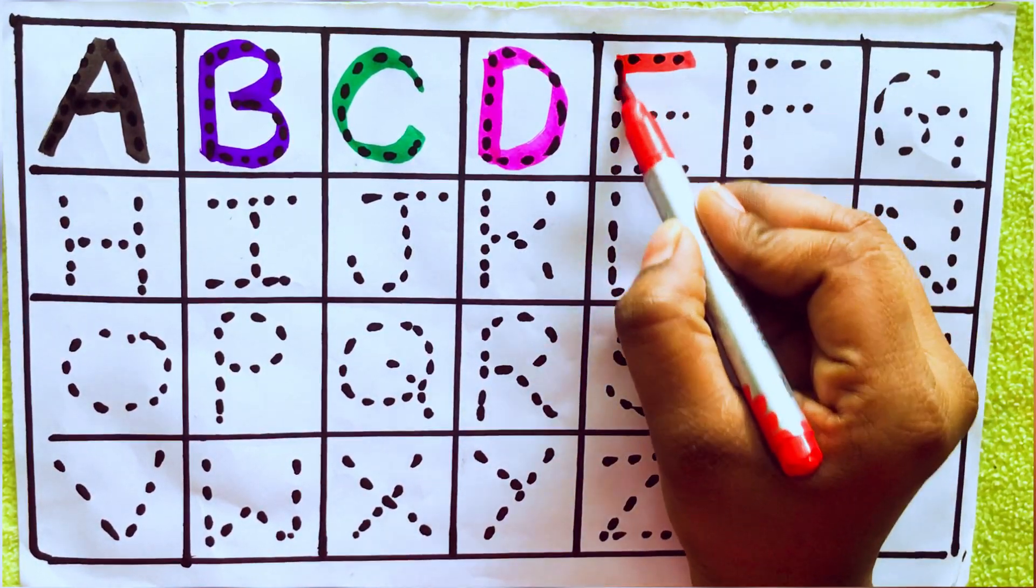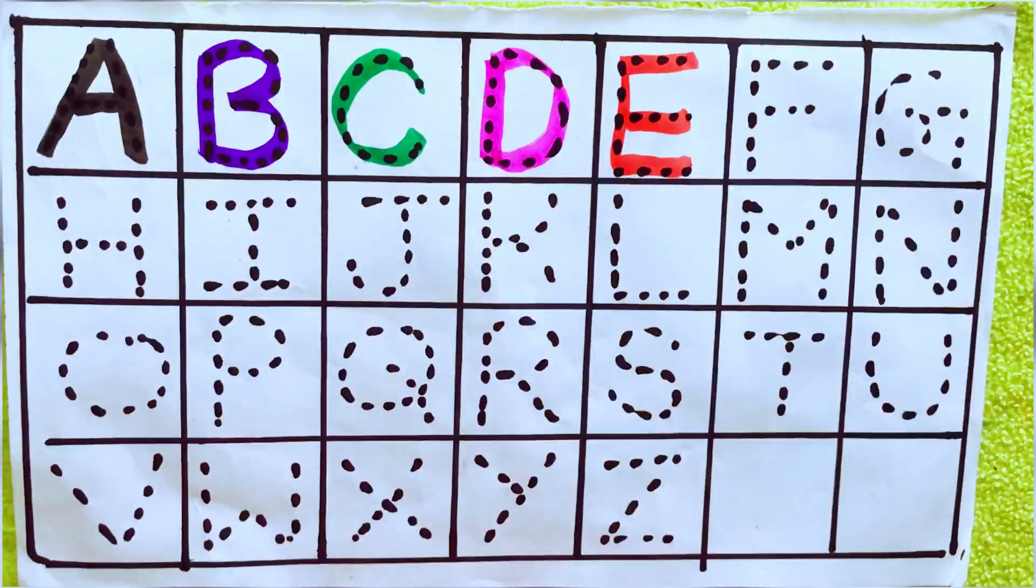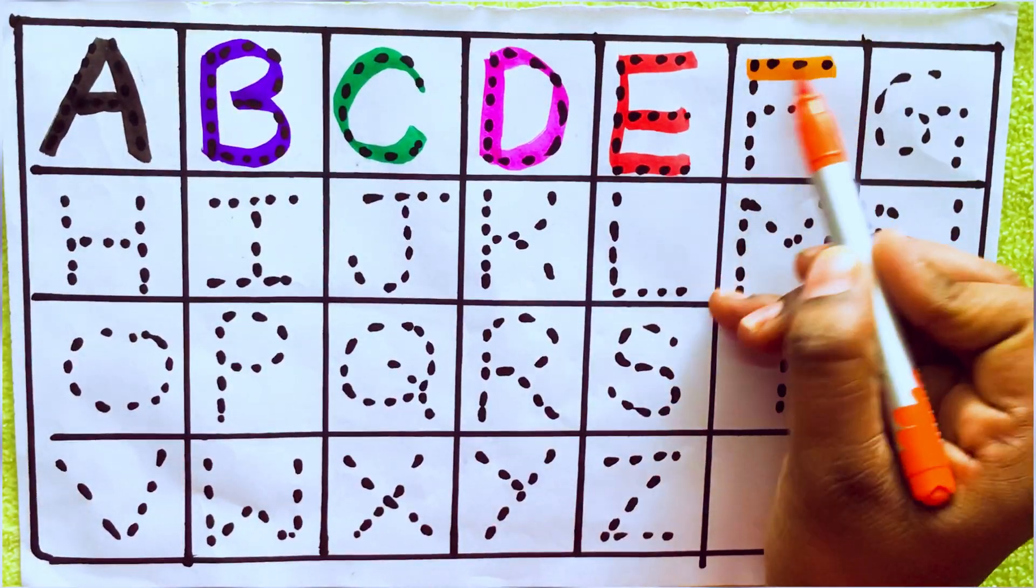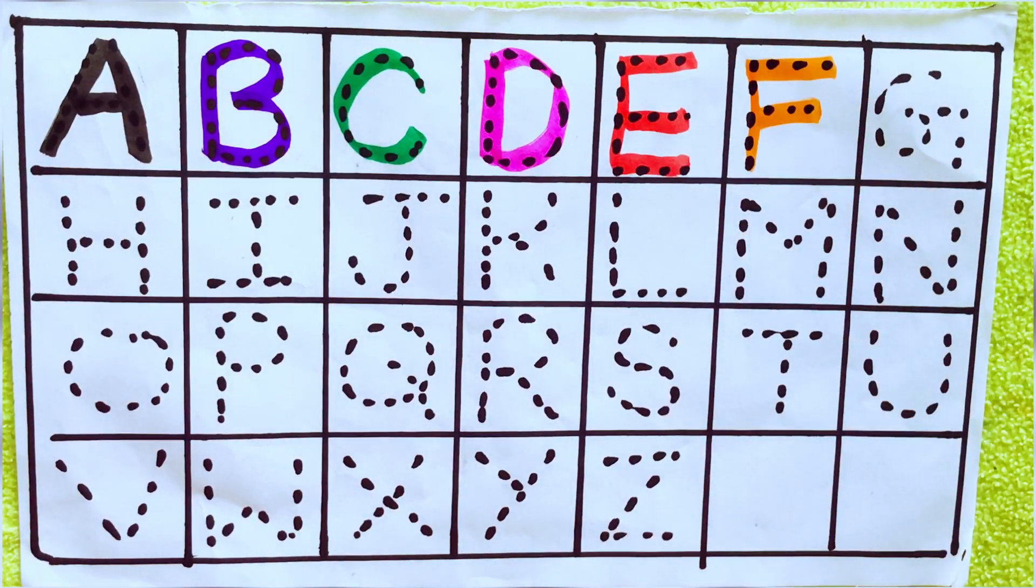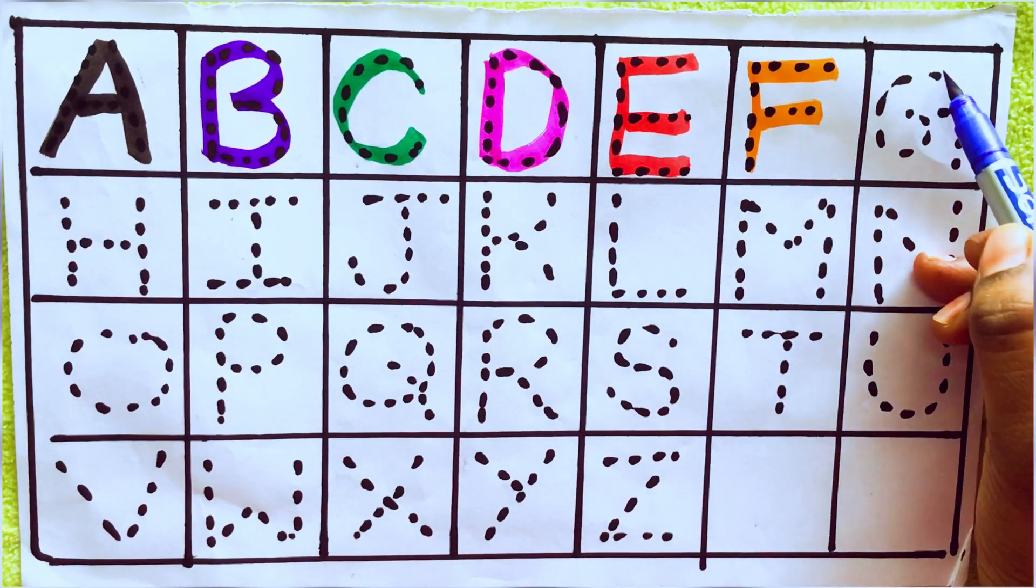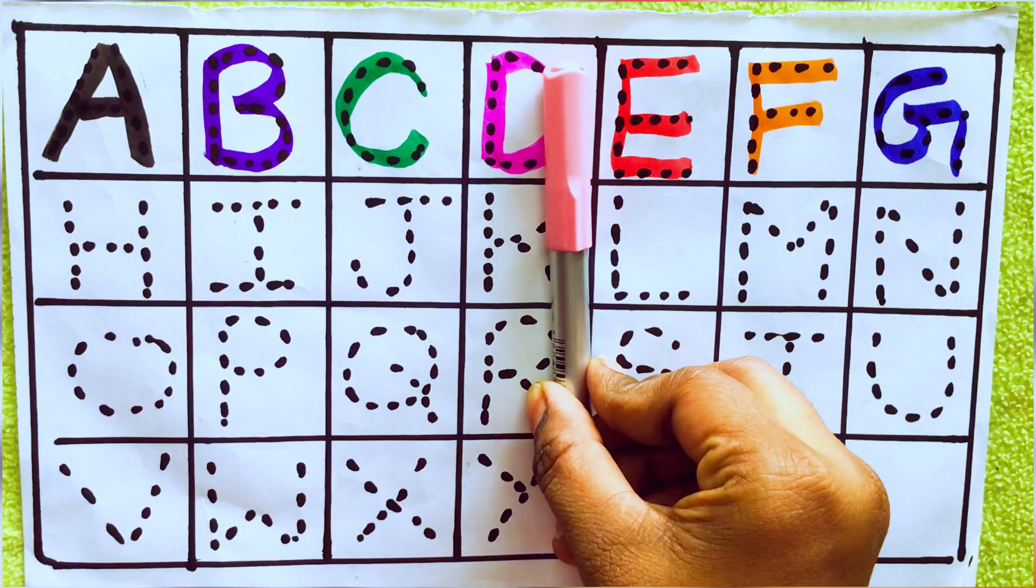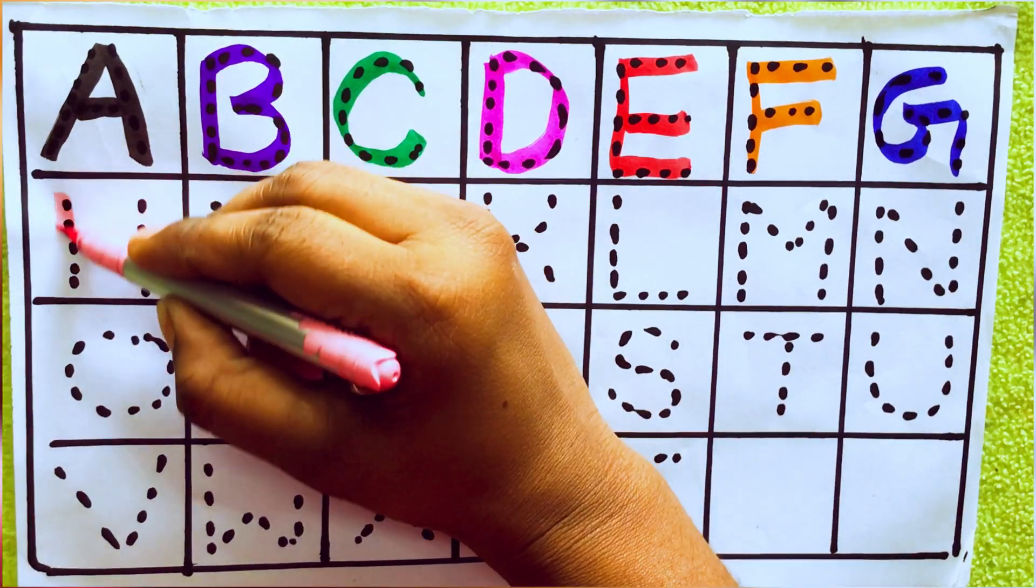Orange color F, F for Fish. Blue color G, G for Goat. Light pink color H, H for Hat.